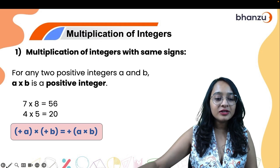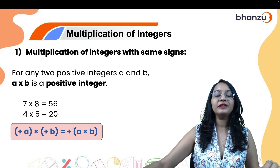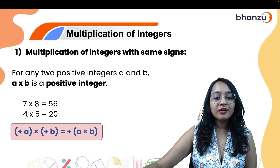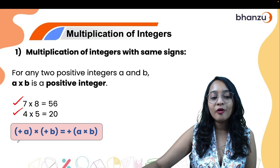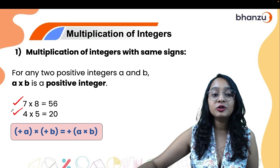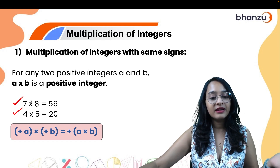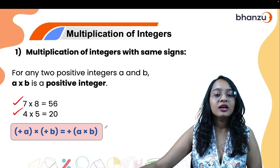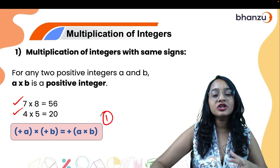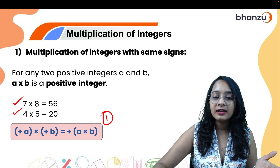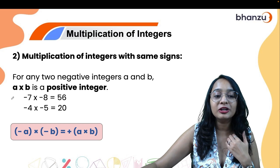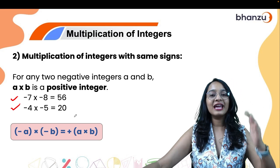Let us get started with the first rule: multiplication of integers with the same sign — both positive, or both negative. When you multiply two positive numbers the answer is always positive: plus 7 multiplied with plus 8 gives plus 56. So rule one: whenever you multiply two positive integers the answer is always positive.